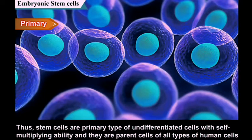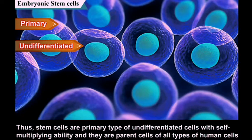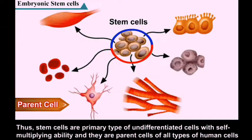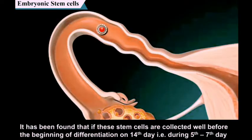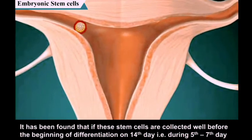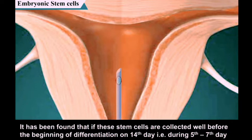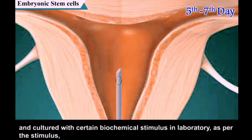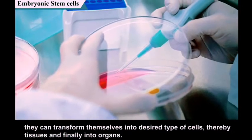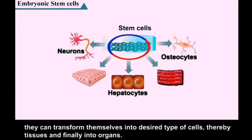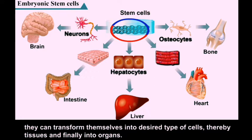Stem cells are the primary type of undifferentiated cells with self-multiplication ability, and they can give rise to cells of all types in the human body. This property of stem cells is called pluripotency. If these stem cells are collected before the beginning of differentiation on the 14th day — that is, during the 5th to 7th day — and cultured with certain biochemical stimuli in a laboratory, they can transform themselves into desired types of cells, thereby producing tissues and finally organs.